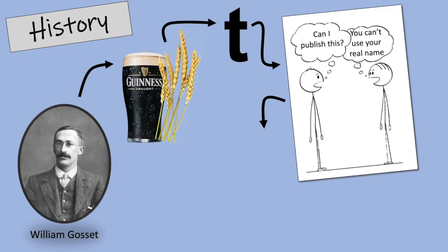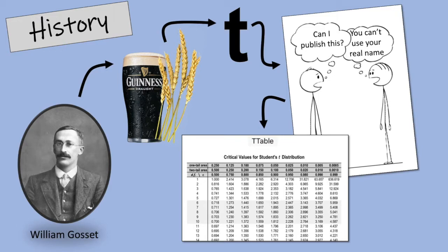So William used the general name of student to publish his findings. If you look in the back of a statistics book you'll see this table of critical values for students t distributions. It's not because it's in the textbook that it's called students t distributions. It's because it's Gossett's pseudonym. Interesting, huh?